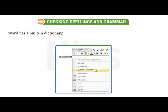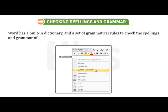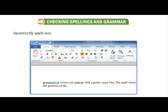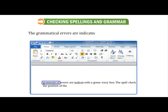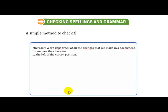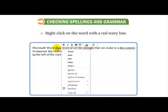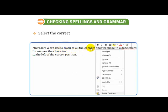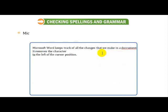Now let us talk about checking spelling and grammar. Word has a built-in dictionary and a set of grammatical rules to check the spellings and grammar of the text document. Incorrectly spelled words are displayed with a single red wavy line under them, and grammatical errors are indicated with a green wavy line. The spell check starts from the position of the cursor and checks the complete document. To check spelling, right-click on the word with a red wavy line; a shortcut menu opens displaying various suggestions. Select the correct spelling from the suggestions list and Microsoft Word automatically replaces the incorrect spelling.